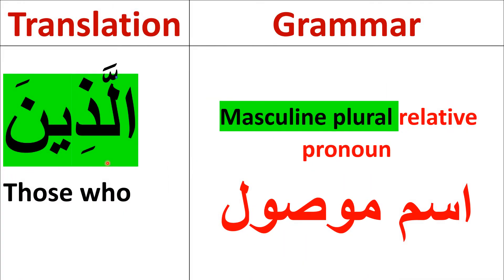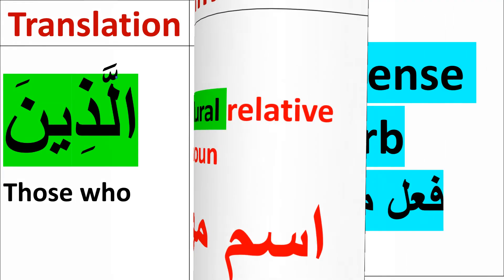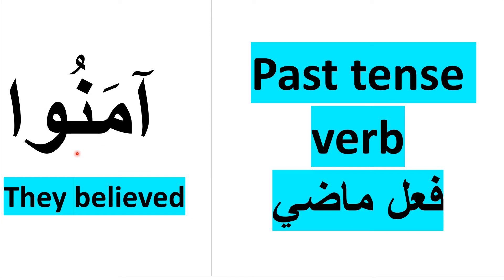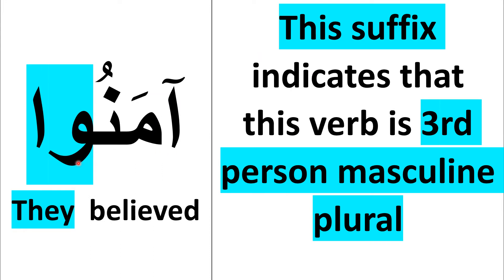الذين — 'Those who' — is an Ism Mawsool, a masculine plural relative pronoun. آمنوا means 'They Believed' and is a فعل ماضي, a past tense verb. The suffix on آمنوا indicates that this verb is third-person masculine plural.